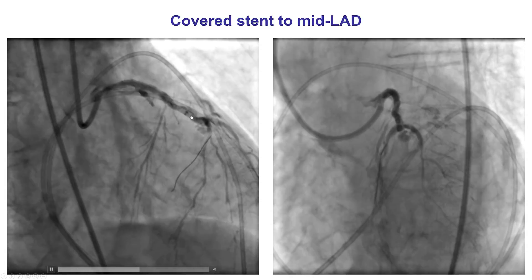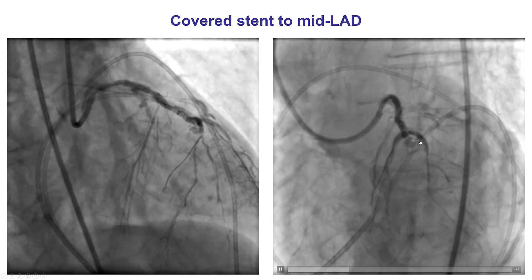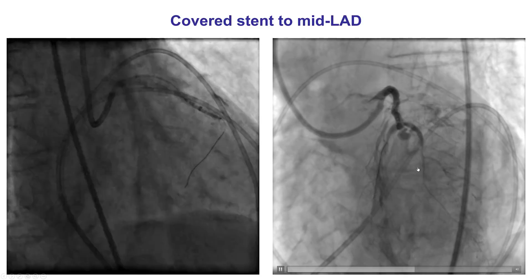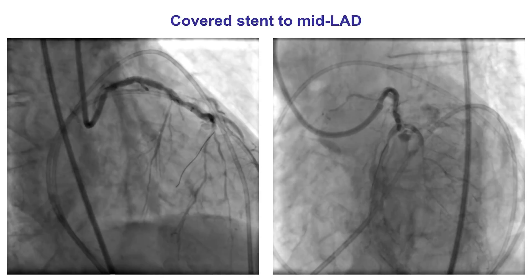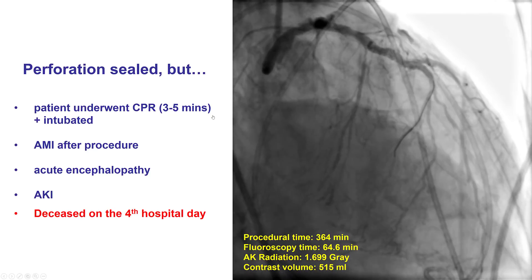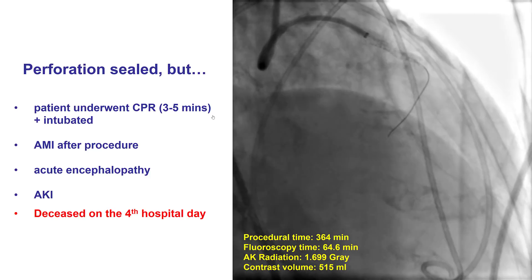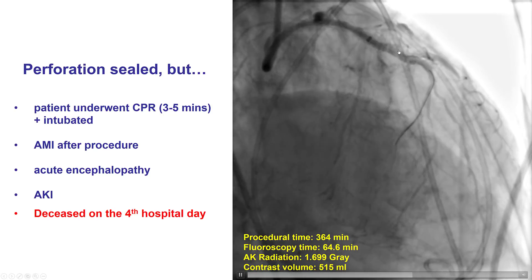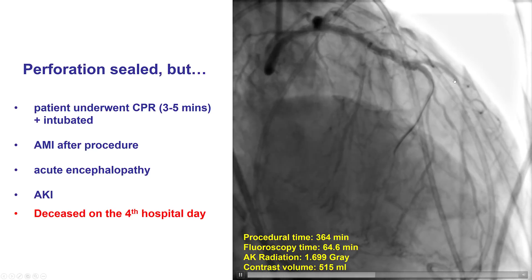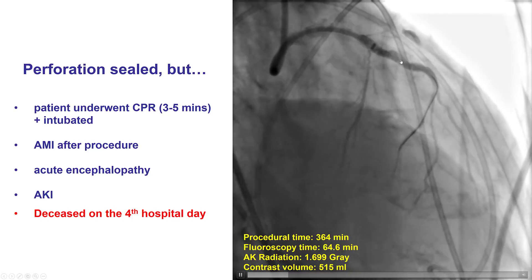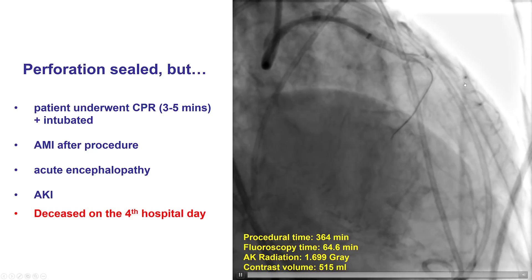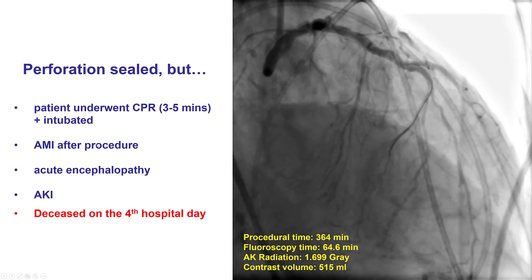Ideally you want to go further distal. We debated what to do about the large diagonal branch if we occluded it with the covered stent. But the patient was clearly bleeding into the pericardium with a large perforation that wouldn't seal, so we felt we had no choice. Using the shortest covered stent available, we were finally able to deploy it, and it did result in sealing of the perforation with TIMI flow into the LAD. However, we had jailed the origin of the large diagonal branch. There was still some flow in the diagonal, likely because sealing was not complete proximally, but it is quite likely the diagonal subsequently occluded, resulting in a post-procedural myocardial infarction.